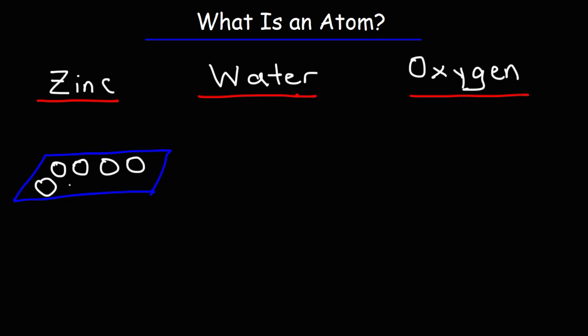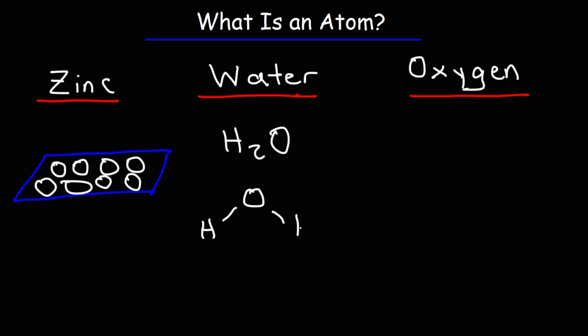All metals are composed of atoms. Water is made up of molecules, such as H2O. A molecule is a tiny particle that is composed of multiple atoms. So in a single water molecule, there are three atoms: two hydrogen atoms and one oxygen atom. Oxygen gas, which is part of the air that we breathe in, is composed of oxygen molecules. This is known as a diatomic molecule because it only contains two atoms of the same type — that is, two atoms of oxygen.